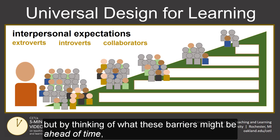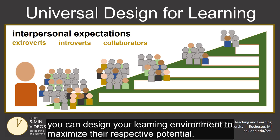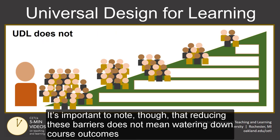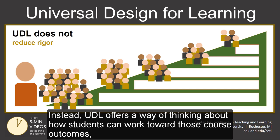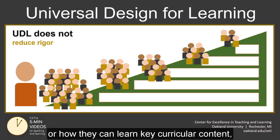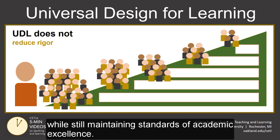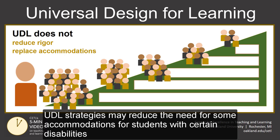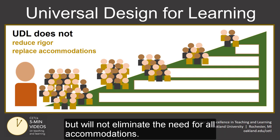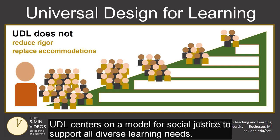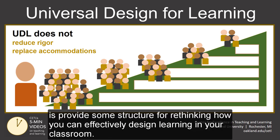But by thinking about what these barriers might be ahead of time, you can design your learning environment to maximize their respective potential. It's important to note, though, that reducing these barriers does not mean watering down course outcomes or overhauling curricular content. Instead, UDL offers a way of thinking about how students can work toward those course outcomes, or how they can learn key curricular content while still maintaining standards of academic excellence. UDL strategies may reduce the need for some accommodations for students with certain disabilities, but will not eliminate the need for all accommodations. Rather than focusing on a disability model, UDL centers on a model for social justice to support all diverse learning needs. What UDL does do, though, is provide some structure for rethinking how you can effectively design learning in your classroom.